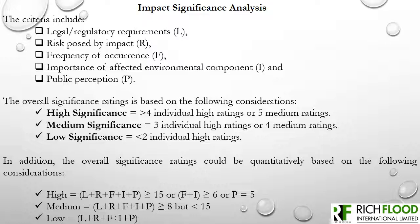For impact significance analysis, the criteria include legal or regulatory requirements, the risk posed by the impact, frequency of occurrence, importance of affected environmental components, and public perception. Legal requirements are used to evaluate impacts based on clearly defined criteria, identified from the laws and regulations guiding the project. This is rated based on whether there are regulatory requirements and whether a permit is required or not.